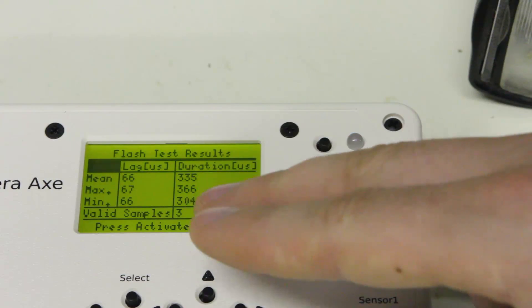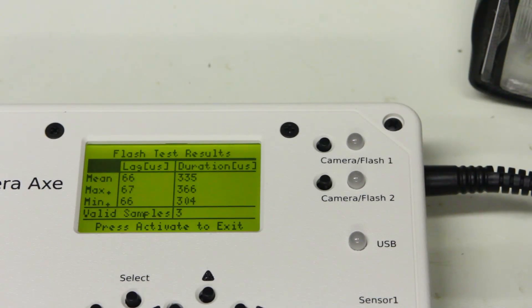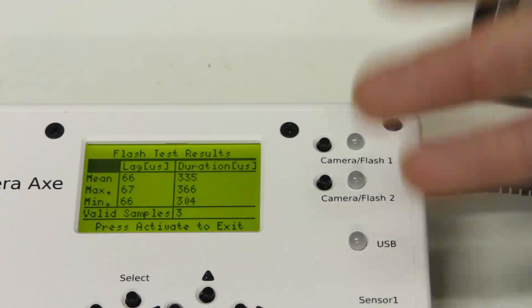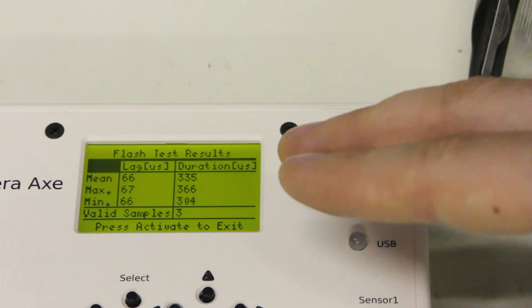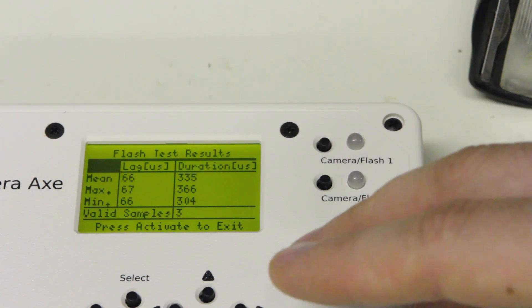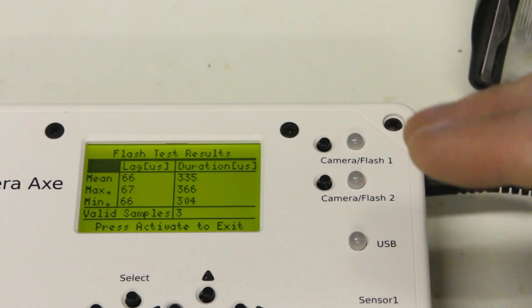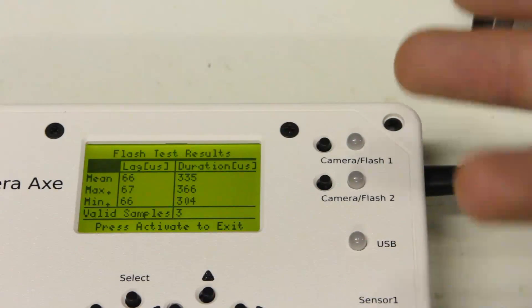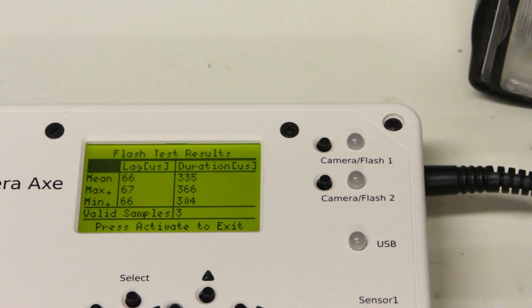However, the durations I can see right away are just way off. I know that this Canon flash set at its minimum power setting should have a duration of around 1/30,000th of a second. So that would equate to a duration of 30 to 40 microseconds. And we're seeing 350 microseconds or 335 on average. We're seeing things that are 10 times too large here. Something's going wrong because I just know the duration of the flash isn't that long.